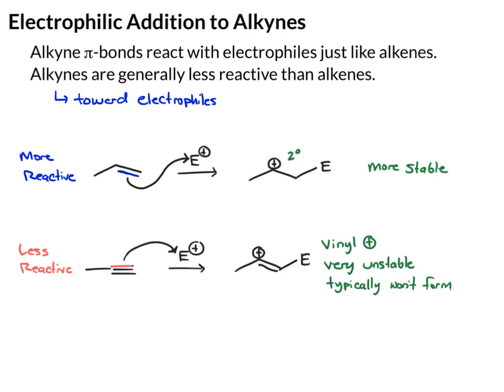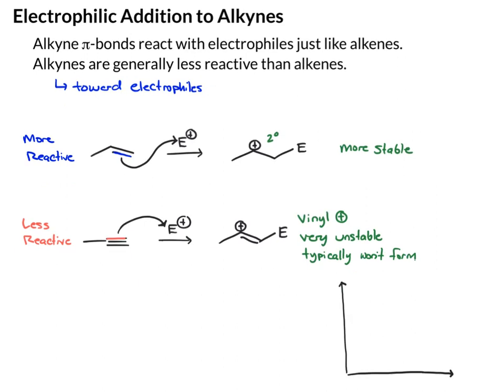When we're thinking about reactivity, we can't solely think about the bond strengths of the bonds we're starting with. We also have to analyze the products or intermediates that we're getting. Let me further explain this with an energy diagram.